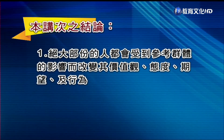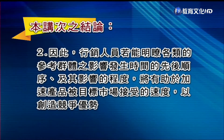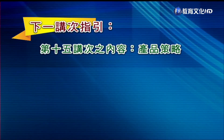比如很多家用品，如清洁剂、洗髮精的广告，通常都使用一般人作为参考群体。以上是本讲的内容，结论如下：绝大部分的人都会受到参考群体的影响而改变价值观、态度、期望跟行为。行销人员如果明了各类参考群体的影响发生的先后顺序及程度，将有助于加速产品被目标市场接受，创造公司的竞争优势。